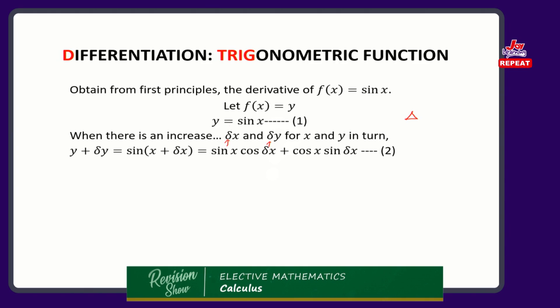In trigonometry, the sin of two unequal angles a and b — sin of (a + b) — is equal to sin a cos b plus cos a sin b. In the place of a and b I have x and delta x. So I have sin x cos delta x plus cos x sin delta x. That gives me equation 2. It is an identity — something you should know. If you're in the first or second year, this may be a little strange to you; if you're in the final year, you may have come across this.